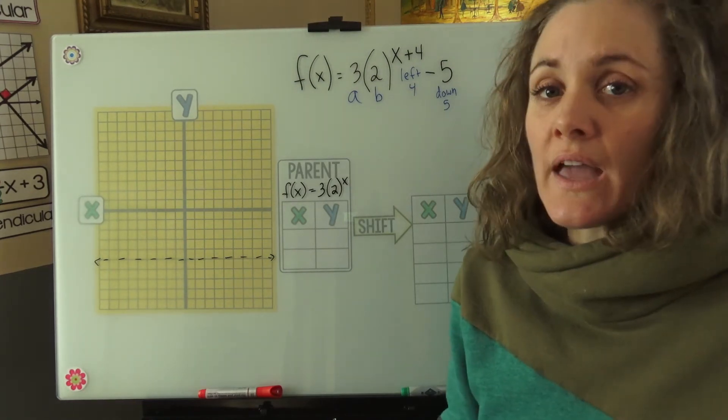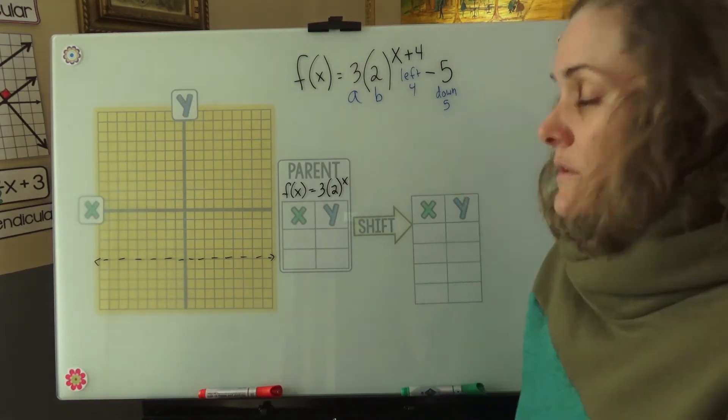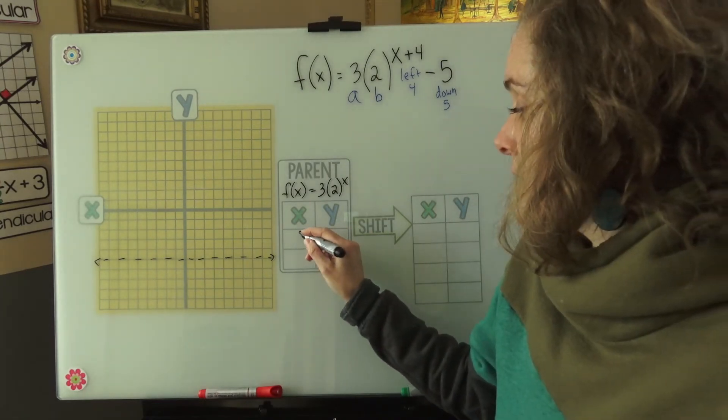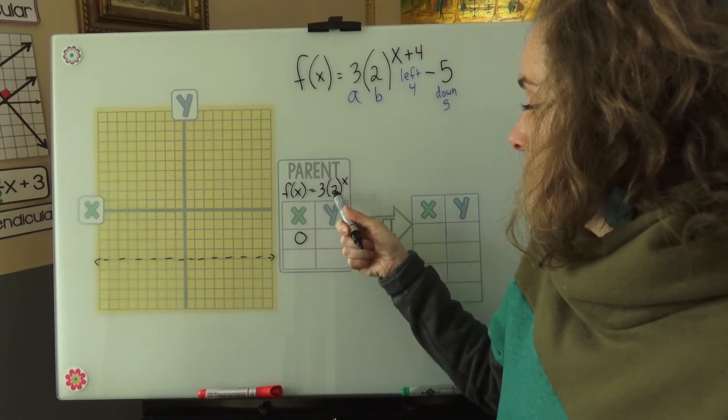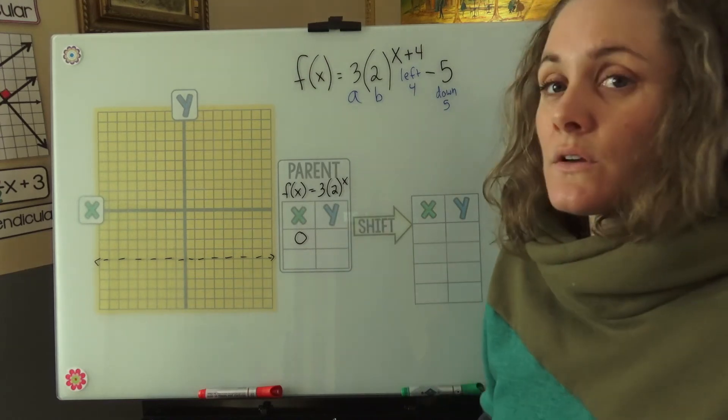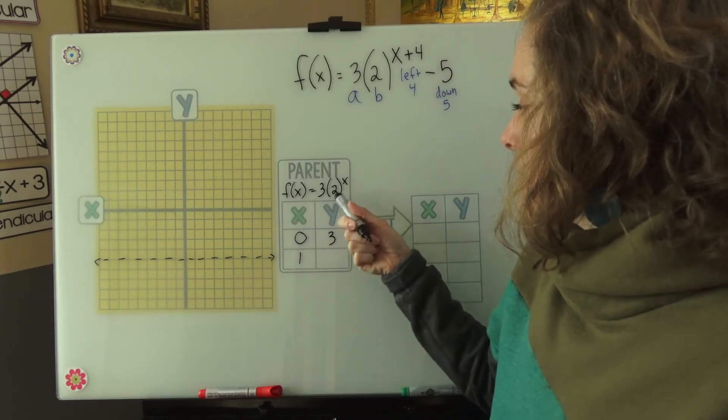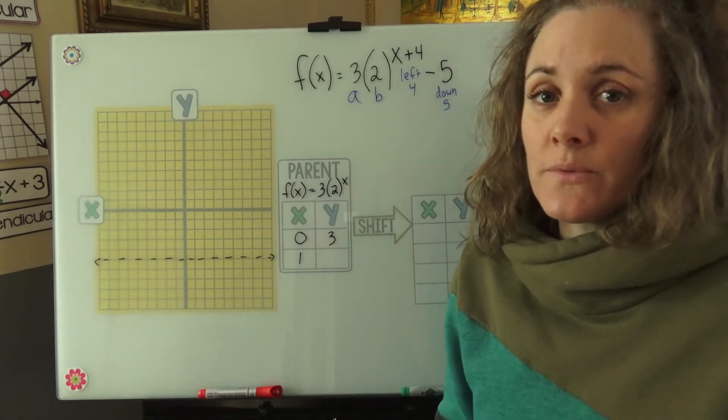We do keep the a value in there because it does change the shape of the graph. The next thing to do is just plug in 0 and 1. If I have an x value of 0, 2 to the 0 is 1, 3 times 1 is 3. If I plug in 1, 2 to the 1 is 2, 3 times 2 is 6.